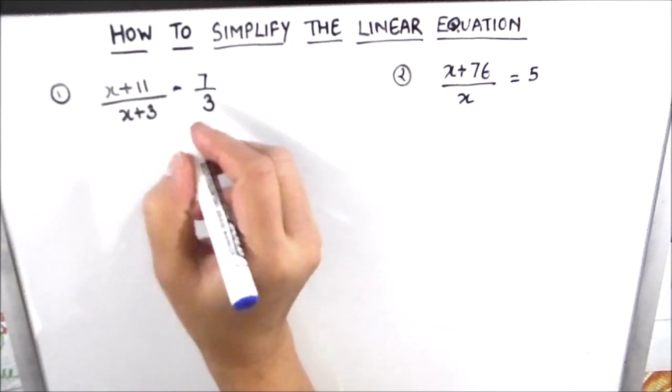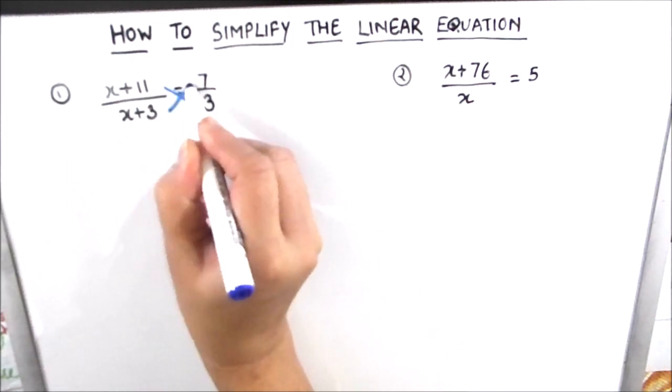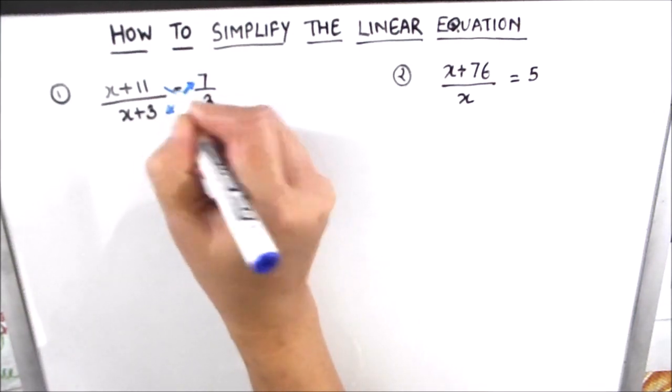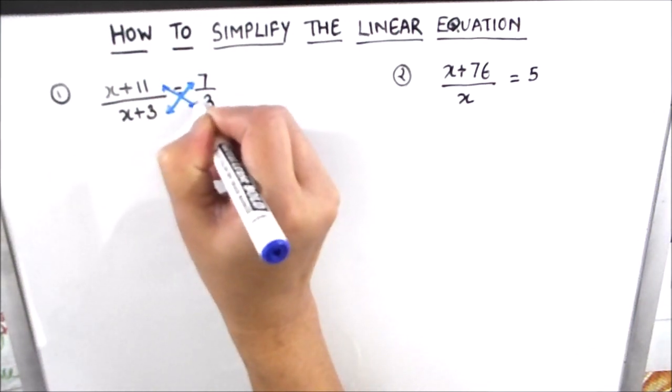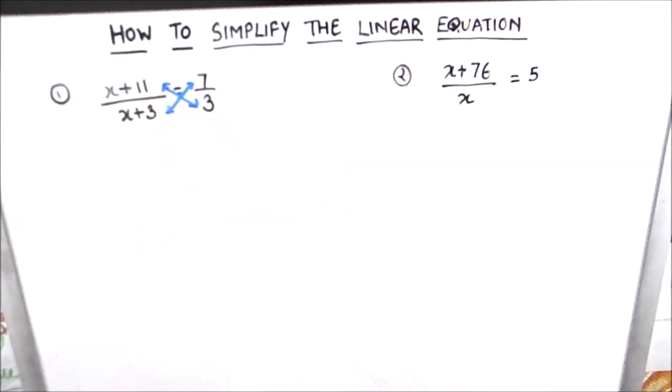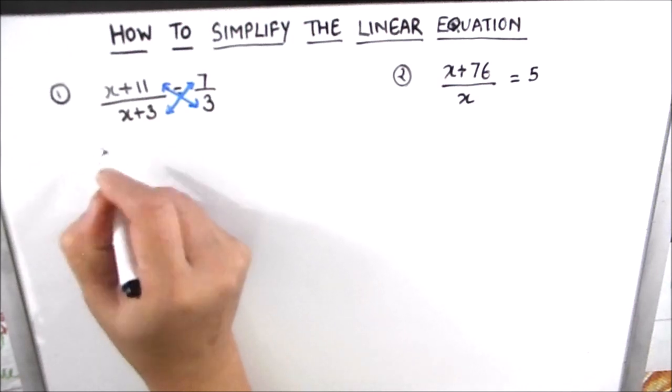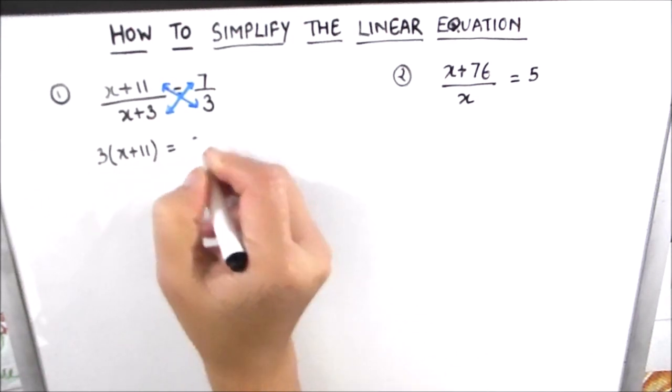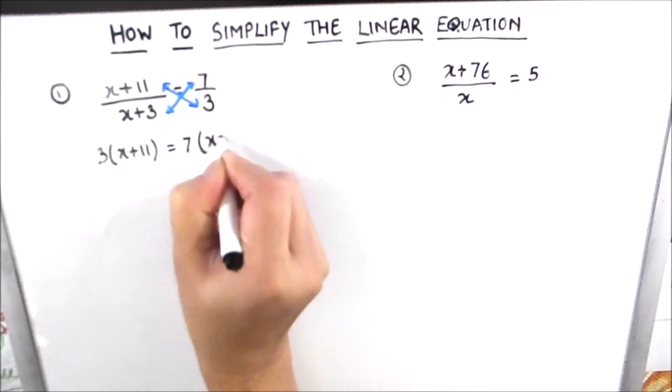For solving these equations we can directly use the cross multiplication method where we multiply the denominator of first fraction by the numerator of second and the denominator of second fraction by the numerator of the first fraction. So we will have 3 times x plus 11 is equal to 7 times x plus 3.